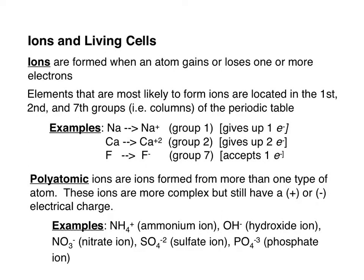If we're going to talk about ionic compounds, it's important to remember that ions are simply atoms that have lost or gained an electron due to electron transfer. Elements in groups 1, 2, and 7 tend to be those elements that will form ions readily. For example, sodium in group 1 tends to form a positively charged ion, and elements in group 7, like fluorine, tend to form negatively charged ions because they gain electrons from atoms like sodium.